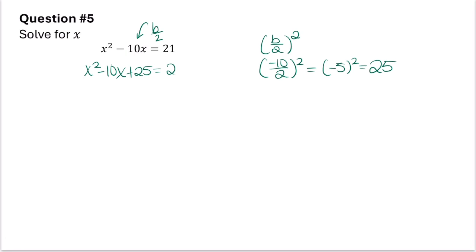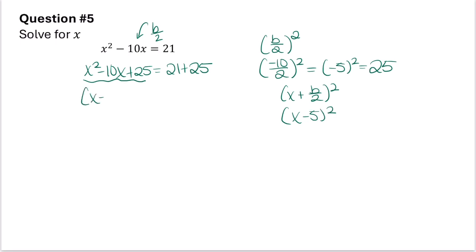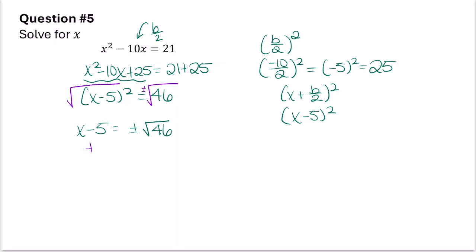This now becomes a perfect square trinomial. It can be rewritten as x plus b over 2 squared. Since b over 2 was negative 5, I can write this as x minus 5 squared. The left side becomes x minus 5 squared equal to 21 plus 25, which is 46. Taking the square root of both sides gives x minus 5 equals plus or minus the square root of 46. Adding 5 to both sides gives x equals 5 plus or minus the square root of 46.